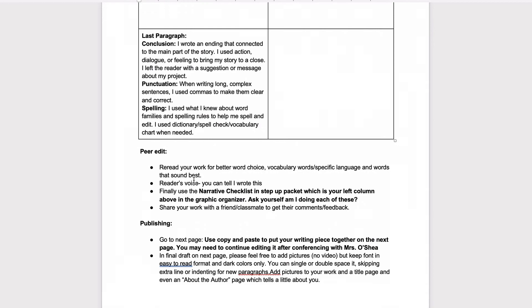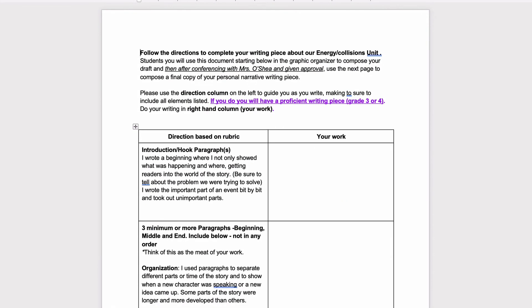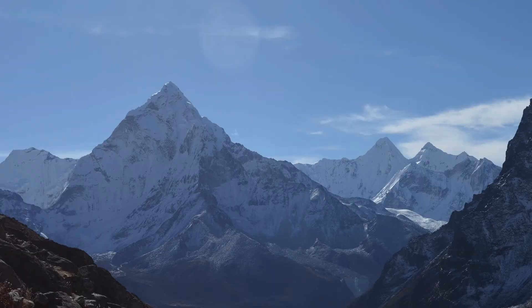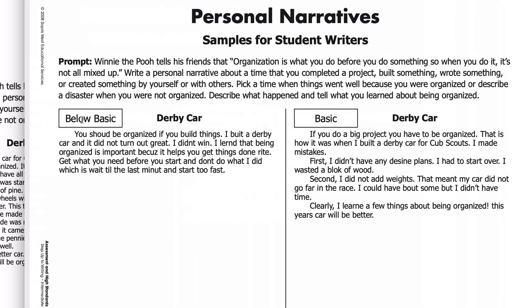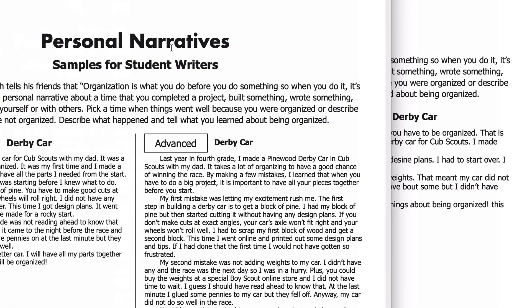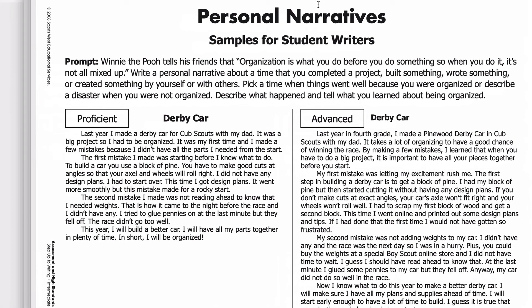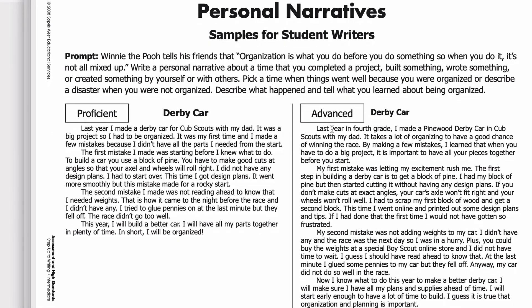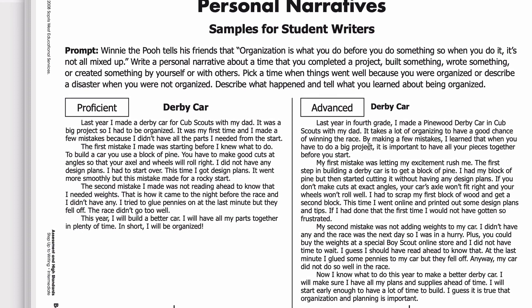That's the assignment Mrs. O'Shea wants you to work on. She's given you some examples of what that looks like — they're called personal narratives — and there are four different categories. There's one that's below basic, one that's just basic, one that's proficient which means it's better than basic, and one that's advanced — that's really, really good writing. What you're aiming to do is write a story like the advanced one. You can use it as an example, see how they did it, and use those ideas while putting your own words in and telling your own story.